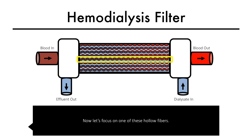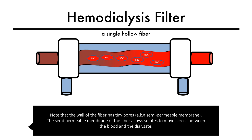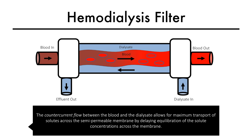Now let's focus on one of these hollow fibers. Note that the wall of the fiber has tiny pores which make it a semipermeable membrane. The semipermeable membrane of the fiber allows solutes to move across between the blood and the dialysate. The counter-current flow between the blood and the dialysate allows for maximum transport of solutes across the semipermeable membrane by delaying equilibration of the solute concentrations.